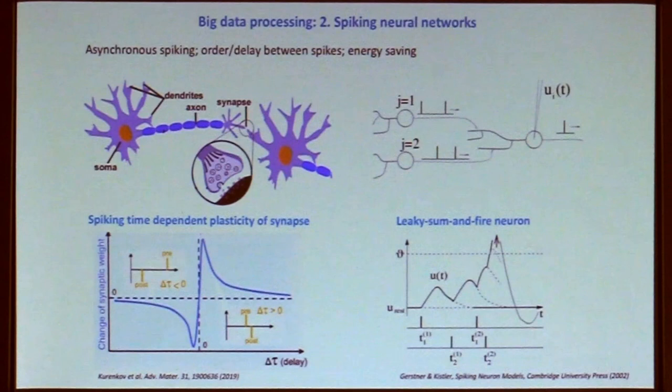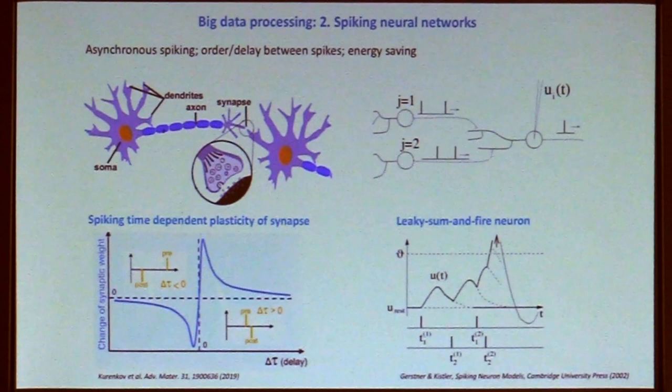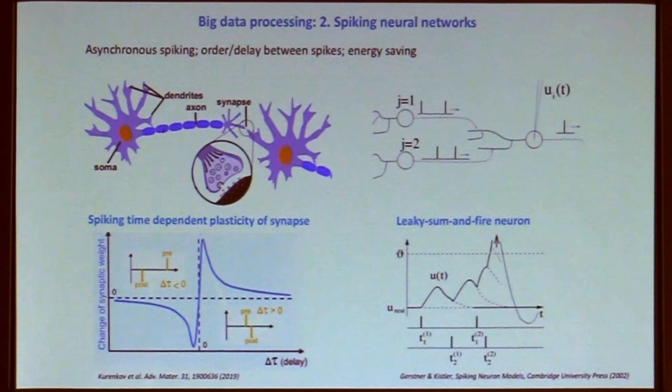In terms of neuromorphics, the first principle I introduced is artificial neural networks, which from the architecture perspective can still use standard computers with memory and processor, or logic inside memory, all running synchronously under a common clock.